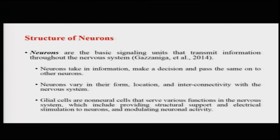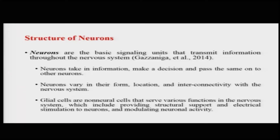Neurons also vary in their form, in their location, and in the patterns of interconnectivity within the nervous system. There are neurons of different kinds and shapes across different parts of the brain and the entire nervous system. Another interesting kind of cells available within the nervous system are glial cells, which are non-neural cells but serve very important functions like providing structural support and electrical stimulation to neurons, and also sometimes modulating the electrical activity throughout neurons.